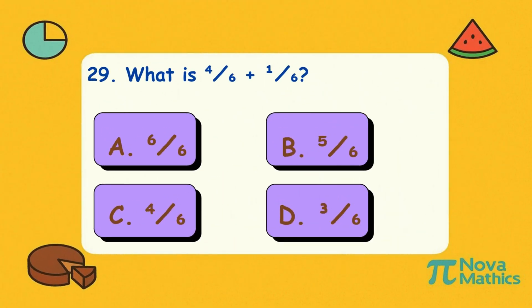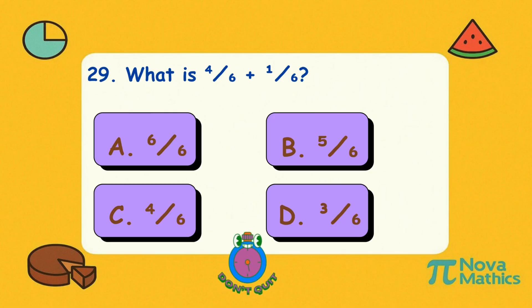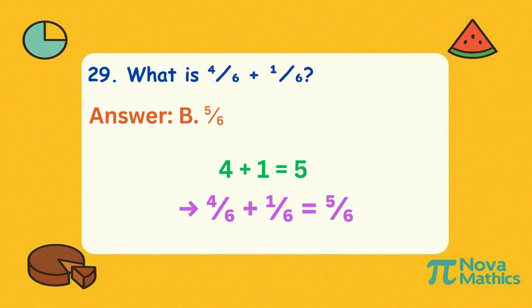Twenty-nine. What is four-sixths plus one-sixth? Add the tops: four plus one is five. The bottom stays six.